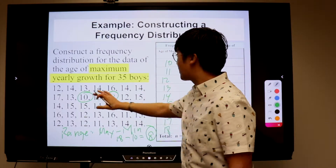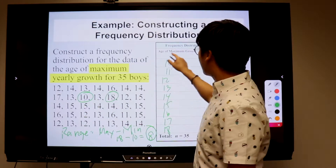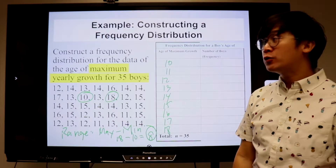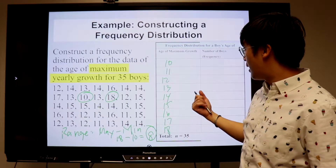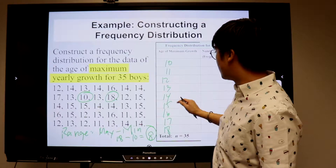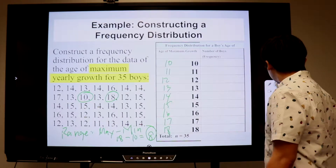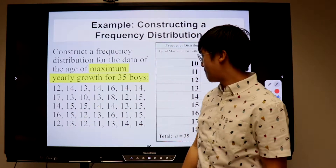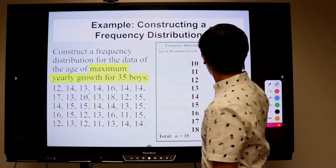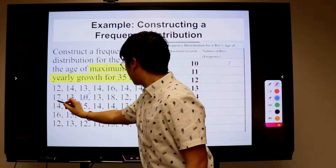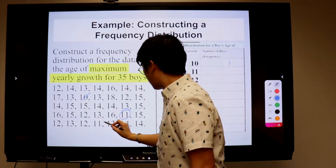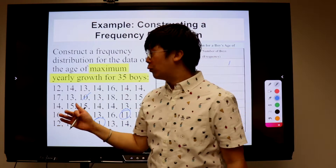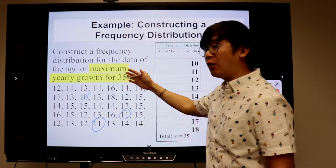There are several boys who had their growth spurt at 10 years old, 11, 12, and we're going to count them in the second column. We're going to count those boys who had their maximum growth rate at 10, 11, 12, 13, 14, 15, and 16. Make sure to be systematic because you cannot miss any of those data points — if you miss one, your frequency distribution table will be wrong. So make sure you are being careful with how you tally your frequency.